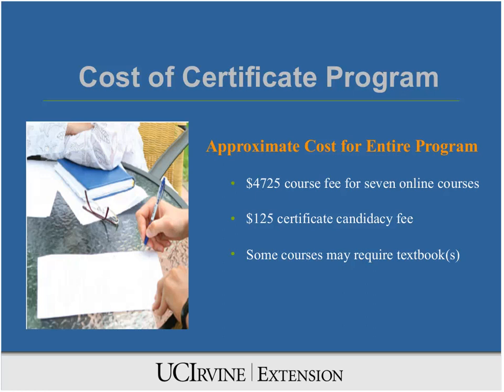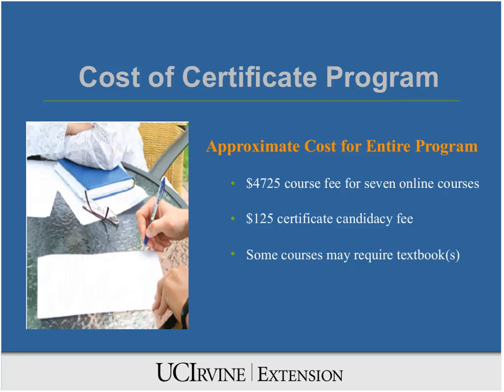Each course in our program costs $675, so you're looking at $4,725 in course fees for the seven online classes. You don't pay the entire total up front — you simply pay for each course individually at the time of enrollment. There is also a $125 certificate candidacy fee, bringing the total to $4,850. Please note that amount does not include textbooks, which some courses may require. Textbook information is provided on the enrollment page before you enroll.